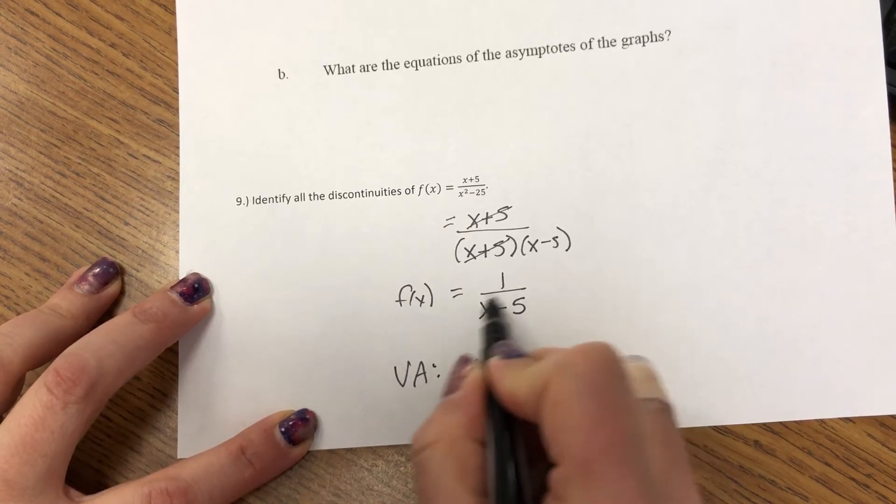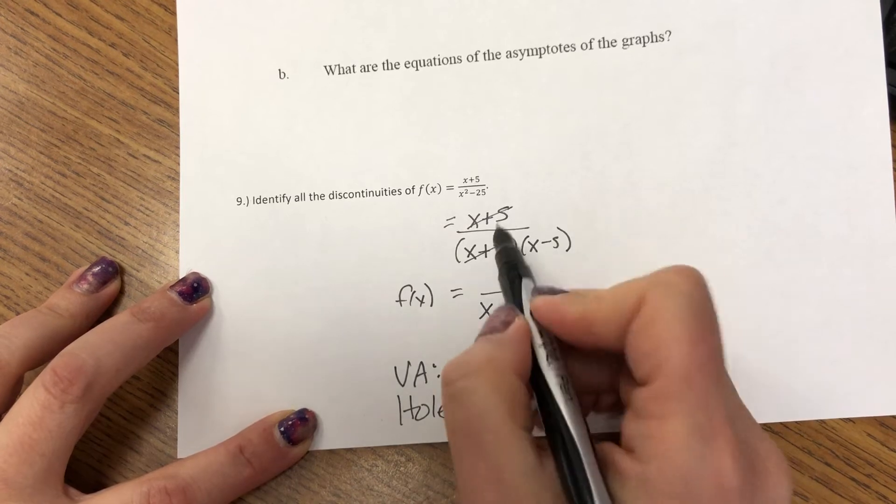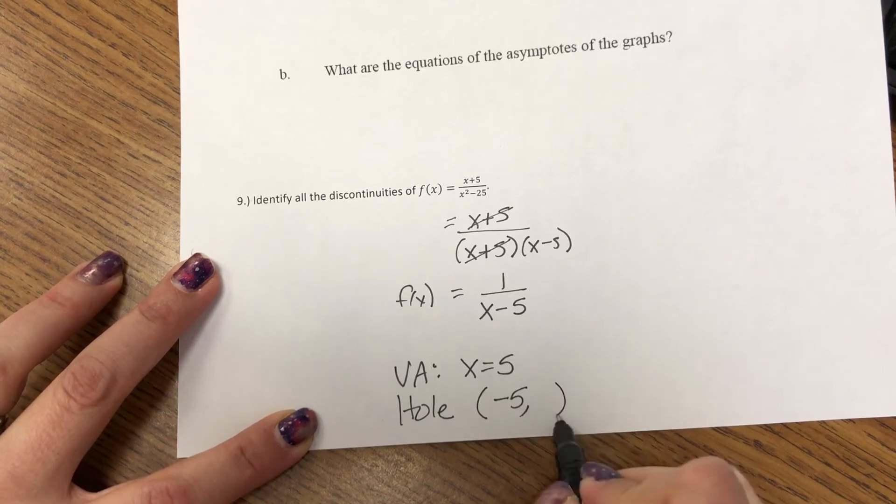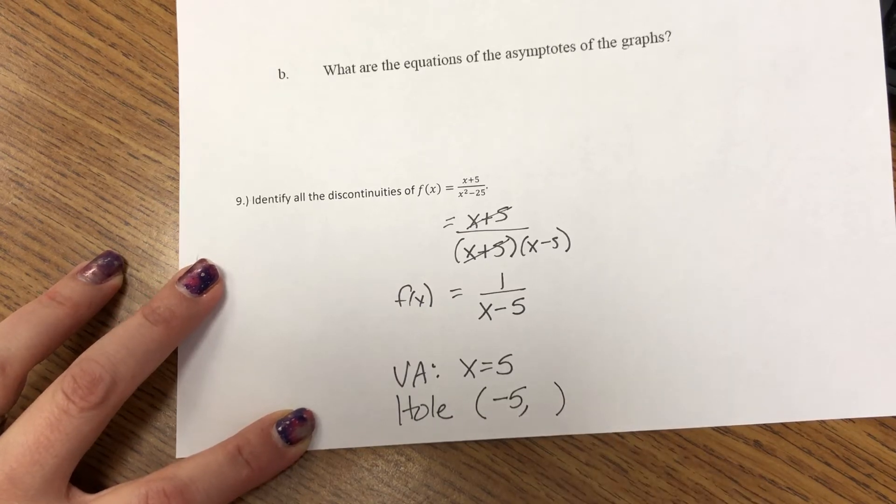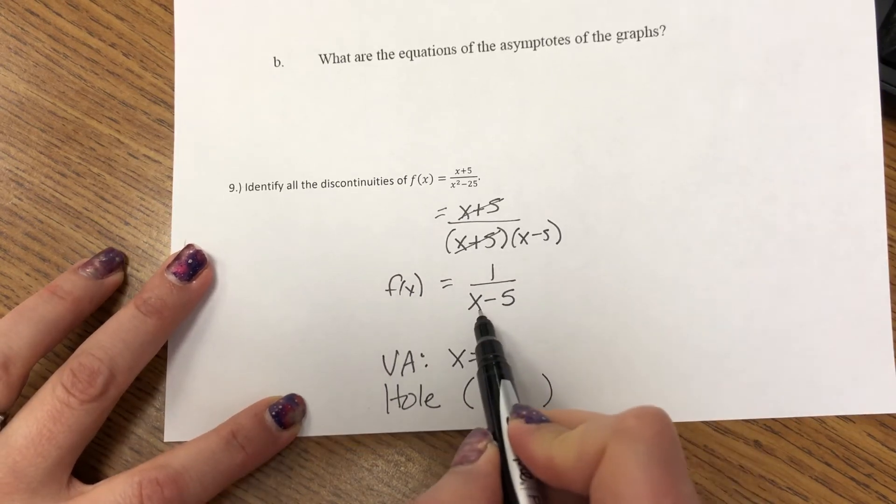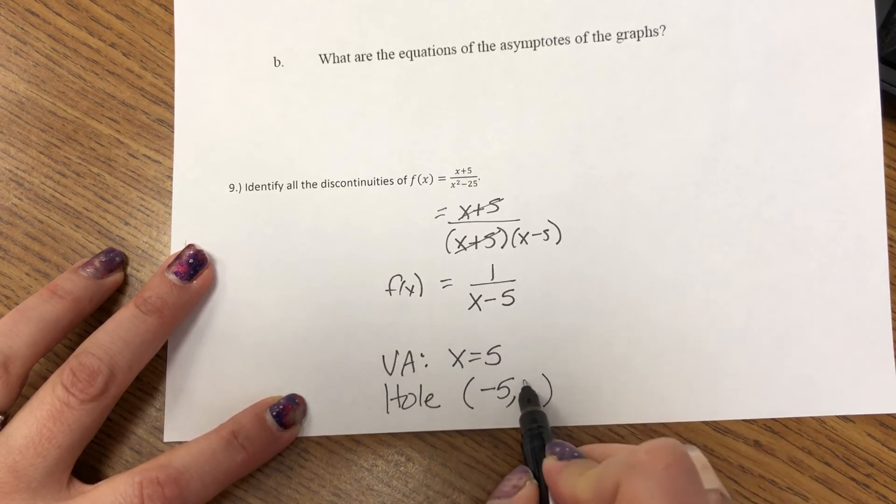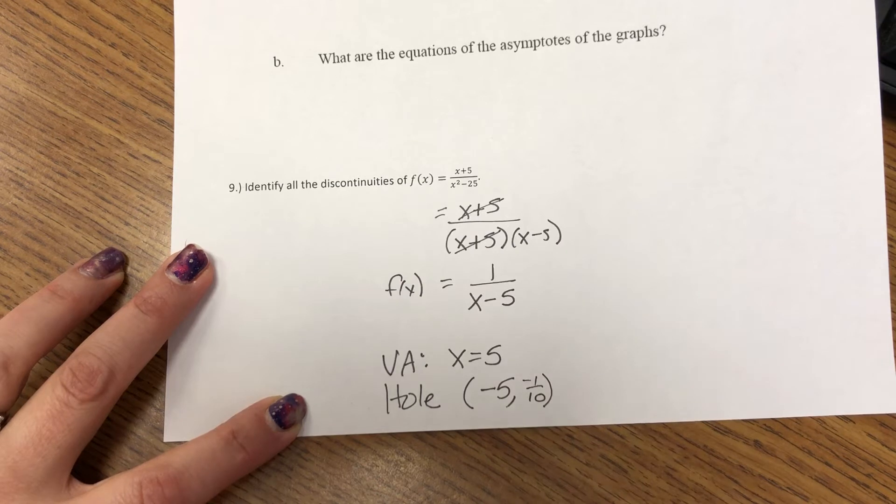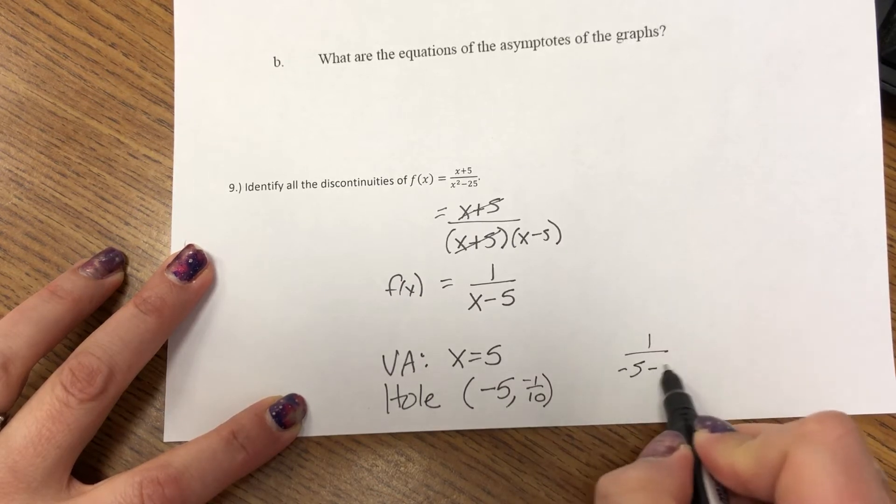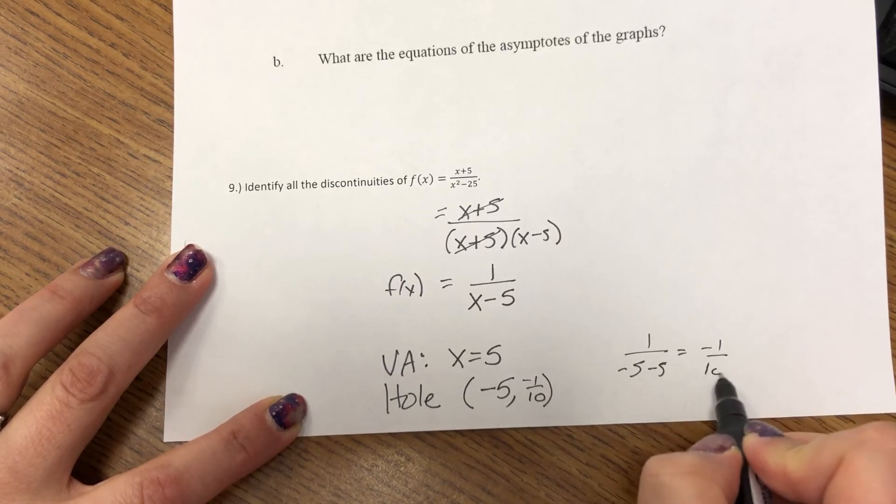So we have a vertical asymptote at x equals 5 because of the denominator. And there's a hole. The factor that eliminated, that equals 0 at negative 5. But then I need to figure out the y value of the hole. So I'm going to substitute that in to here, and we get negative 1 tenth for that y value.